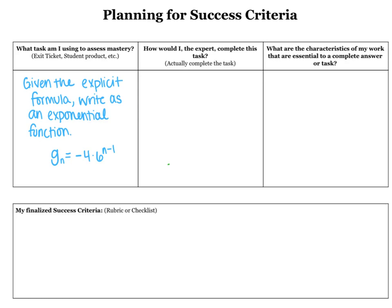When thinking about planning for success criteria, I'm going to start with the task that I'm going to use to assess mastery. For me in this math class, I'm going to use my exit ticket question — what is the thing I'm going to look at to know that my students met my objective? In this case, the exit ticket is: given the explicit formula, write an exponential function, given this explicit geometric sequence.